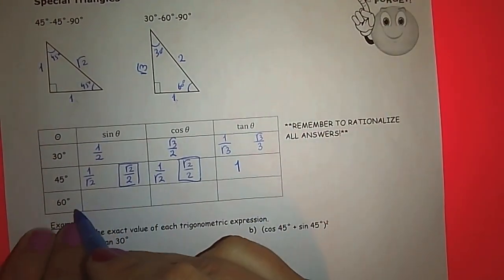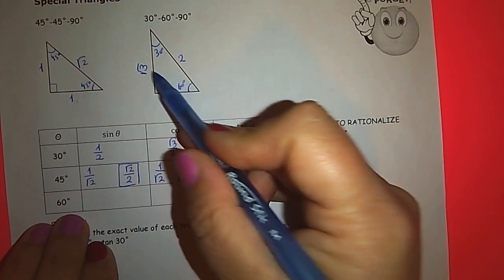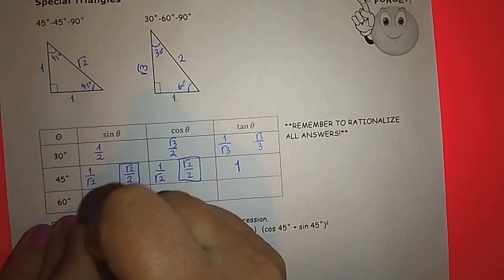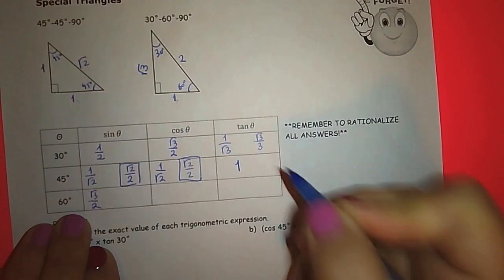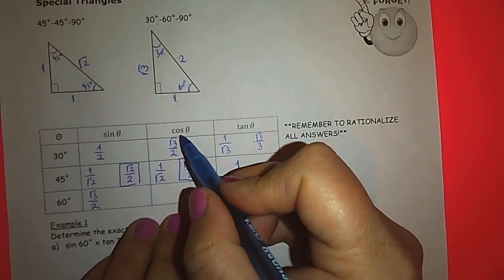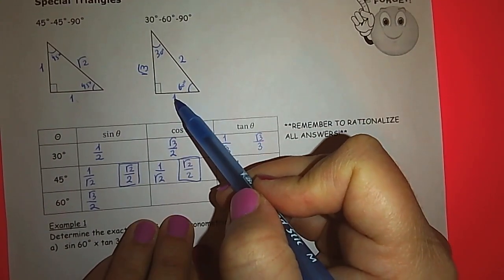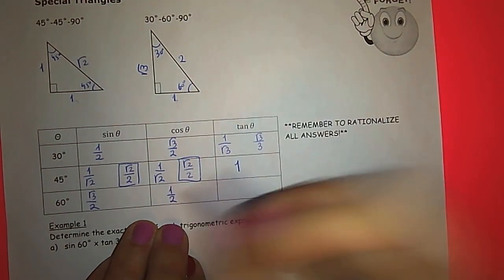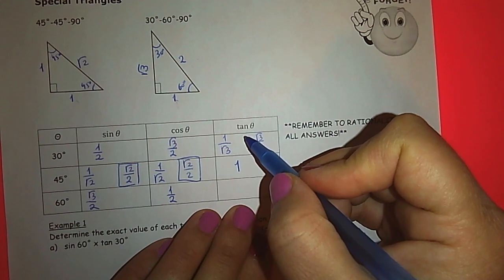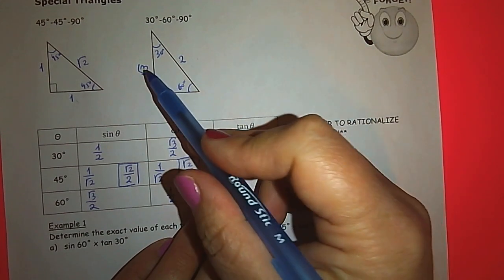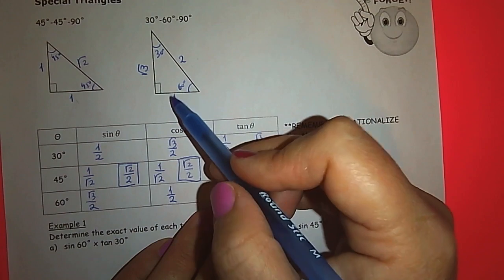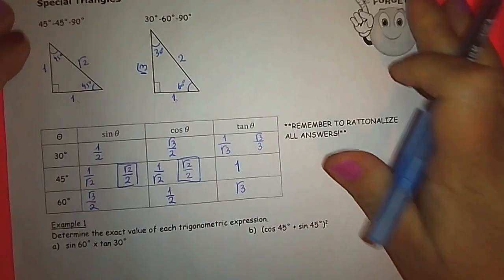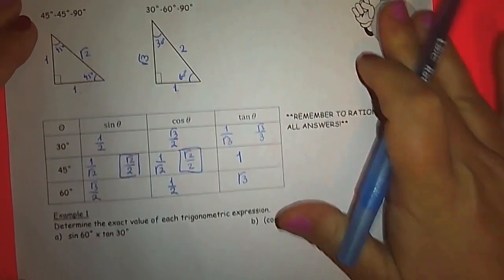Now let's look at sine, cosine, and tangent of 60 degree. Sine 60: opposite is root 3, hypotenuse is two, so we get root 3 over 2. Cosine 60: adjacent over hypotenuse — one over two. And tangent 60 degree: opposite over adjacent — root 3 over one — so we get root 3. This is our second special triangle.